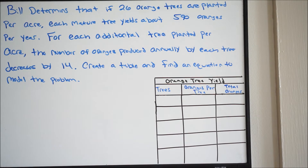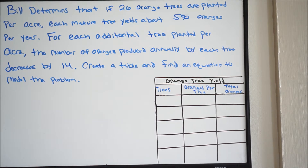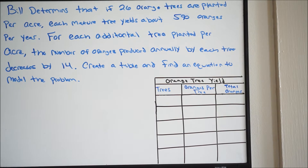It says: Bill determines that if 26 orange trees are planted per acre, each mature tree yields about 590 oranges per year. For each additional tree planted per acre, the number of oranges produced annually by each tree decreases by 14. And it says create a table and find an equation to model the problem.